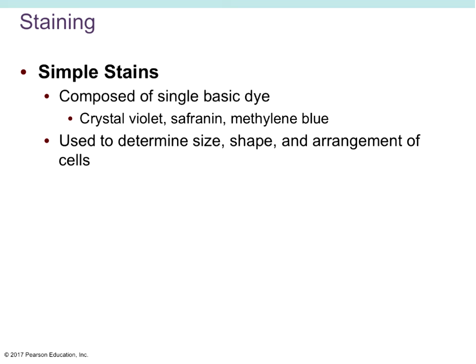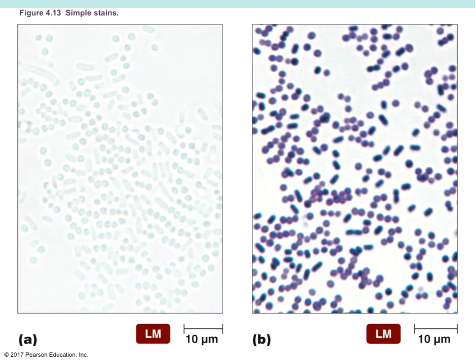Simple stains mean we just use one stain — not a series. Examples of simple stains, which are usually basic dyes, include crystal violet, safranin (used in gram staining), and methylene blue (used to stain cheek cells). They're very useful in determining relative size, shape, and arrangement of cells. However, to differentiate between different classes of bacteria, we'll want to do what's called differential staining. Simple staining lets us visualize cells but not tell who's gram-negative or gram-positive.